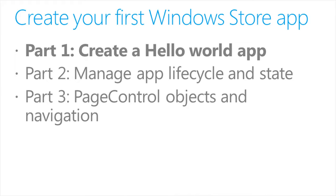We'll show how to create a new project, build some basic HTML for a Hello World page, and show how to handle a button click event. Next, we'll show how to switch between the built-in light and dark themes and how to create your own custom CSS styles. And finally, we'll show how to use the Windows Library for JavaScript rating control.